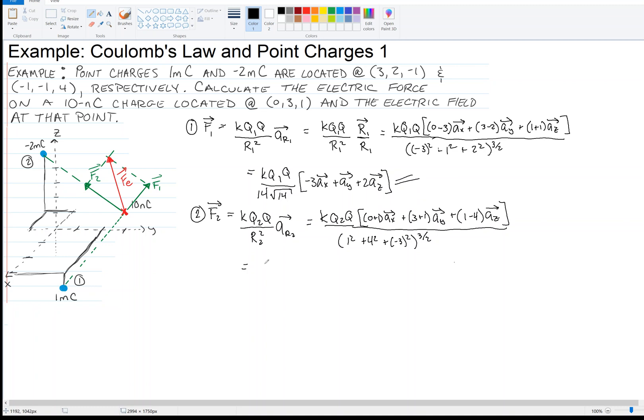Okay, so we plug in some numbers, and we get KQ2Q over, looks like 16, 17, 9, 26 to the 3 halves, so that's 26 times the square root of 26, times the vector AX plus 4AY minus 3AZ, like that. Okay, so we have those two forces.